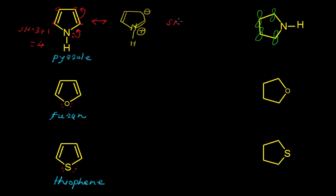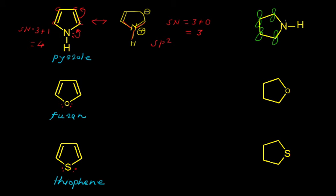Now we can calculate the steric number of this nitrogen in the resonance structure. The steric number equals the total number of sigma bonds: out of the 2 bonds in the double bond, 1 is pi and 1 is sigma; plus the 3rd sigma bond with hydrogen — giving 3 sigma bonds. Plus the total number of lone pairs, which is 0 here. So 3 plus 0 equals 3, meaning this nitrogen is sp2 hybridized. When sp2 hybridized, we write a free p orbital on this nitrogen atom.